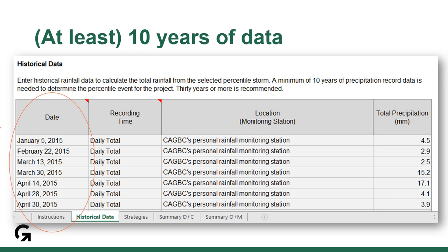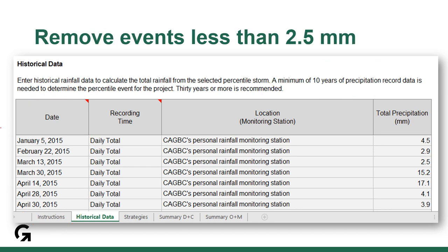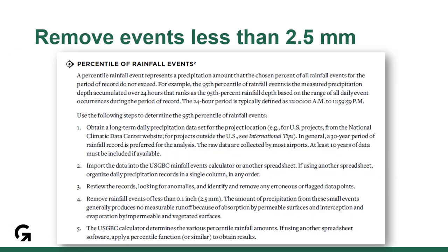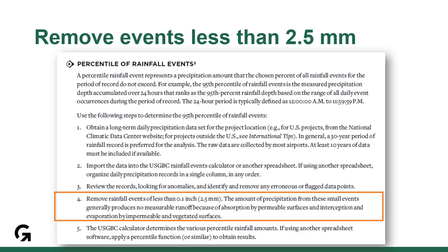You don't need to go overboard here. The calculator does say 30 or more years is recommended, but the minimum is at least 10. The next thing we check is whether rainfall events of less than 2.5 mm were removed from the list of historical data. The requirement to remove these limited rain events is rather buried in the reference guide — it's under further explanation in the credit. Forgetting to remove these small rainfall events will underestimate your percentile rain event depth.